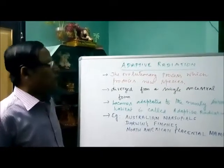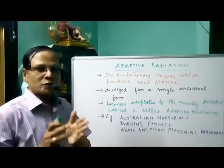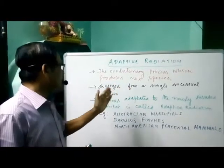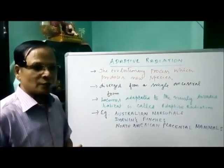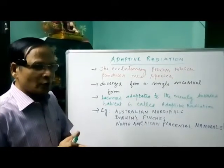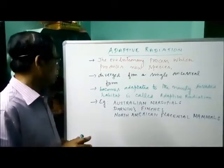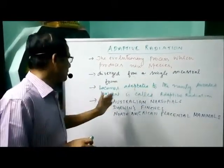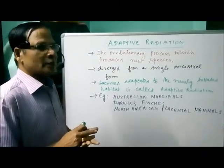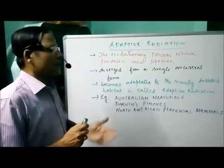The next topic is adaptive radiation — another evolutionary process which results in the formation of new species. New species diverge from a single ancestor form; from a single ancestor form, many forms have diverged. Once formed, because of changed environmental conditions, they invade a new environment and become adapted to the newly invaded habitat, changing their habits accordingly. This process is called adaptive radiation.